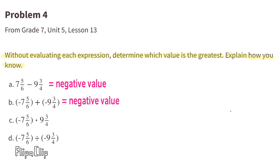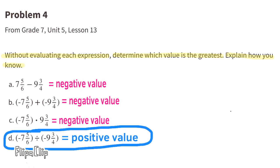C: a negative value times a positive value is going to equal a negative value. D: a negative value divided by a negative value is going to equal a positive value. Out of all four of these expressions, the expression with the greatest value is D, because it's a positive value, and the other three expressions are all negative values.